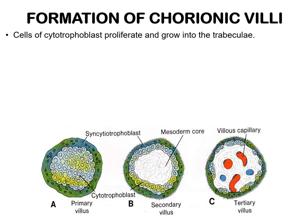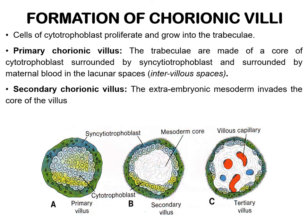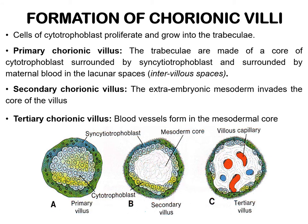The cells of trophoblast proliferate locally and penetrate the trabeculae. The trabeculae are now made up of a core of cytotrophoblast surrounded by syncytiotrophoblast and are called primary chorionic villi. These are surrounded by the maternal blood in the lacunar spaces, now known as intervillus spaces. The extraembryonic mesoderm also penetrates the core of the primary villi to form secondary chorionic villi. The mesenchymal cells in the core of the secondary villus then differentiate into capillaries and blood cells, thus forming the tertiary chorionic villi.